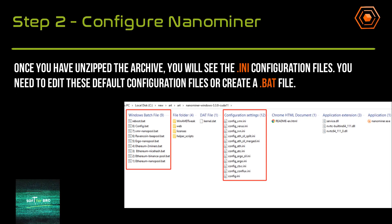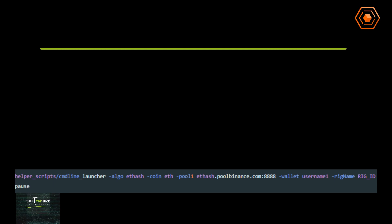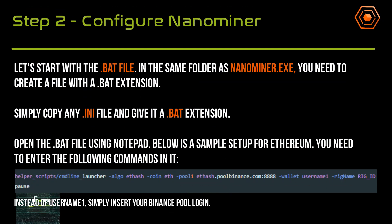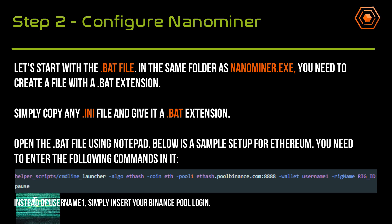You need to edit these default configuration files or create a BAT file. Let's start with the BAT file. In the same folder as NanoMiner, you need to create a file with a .bat extension — simply copy any file and give it a .bat extension.